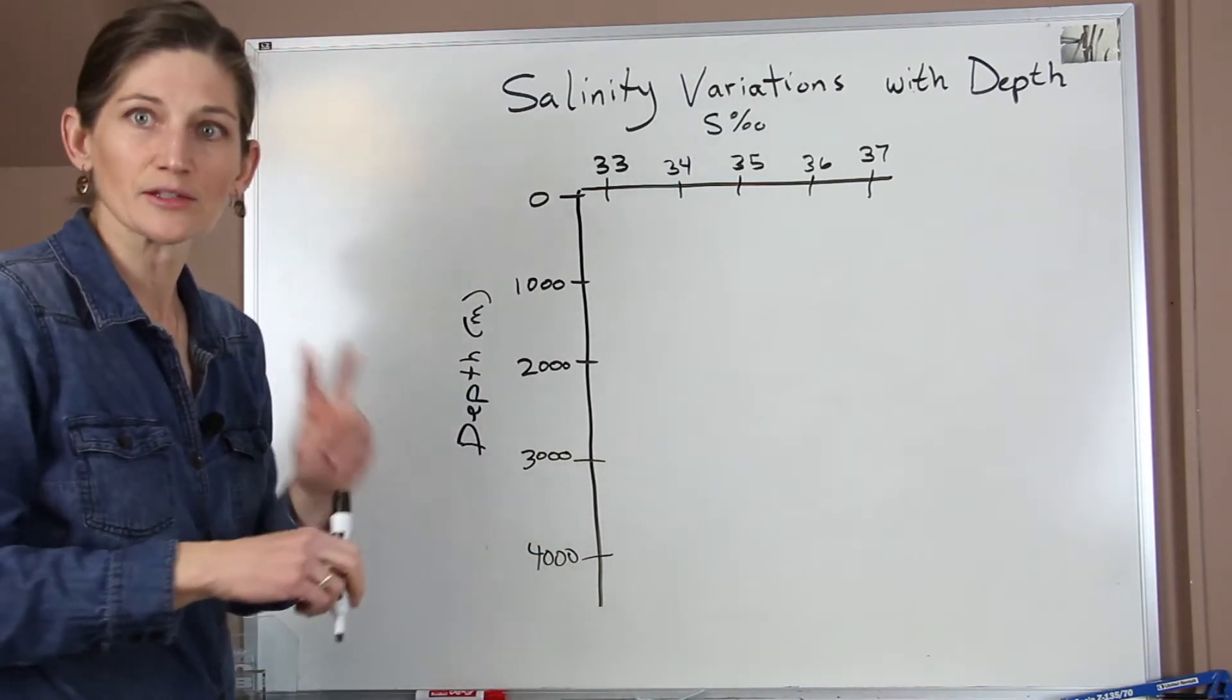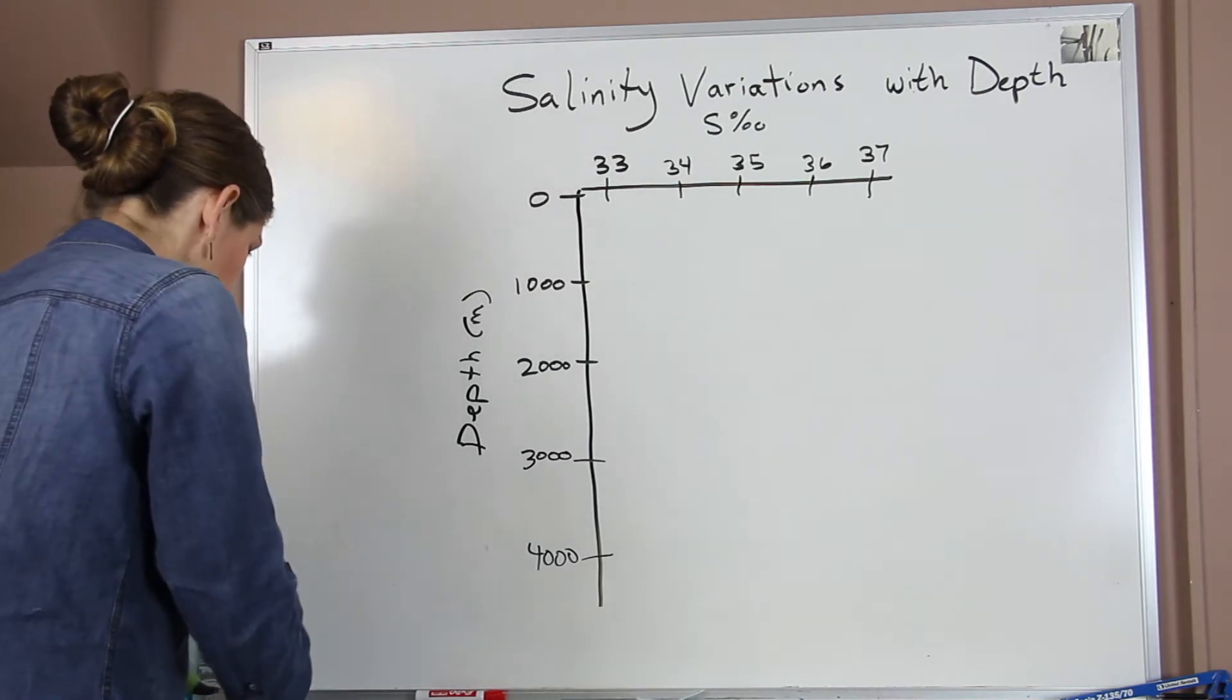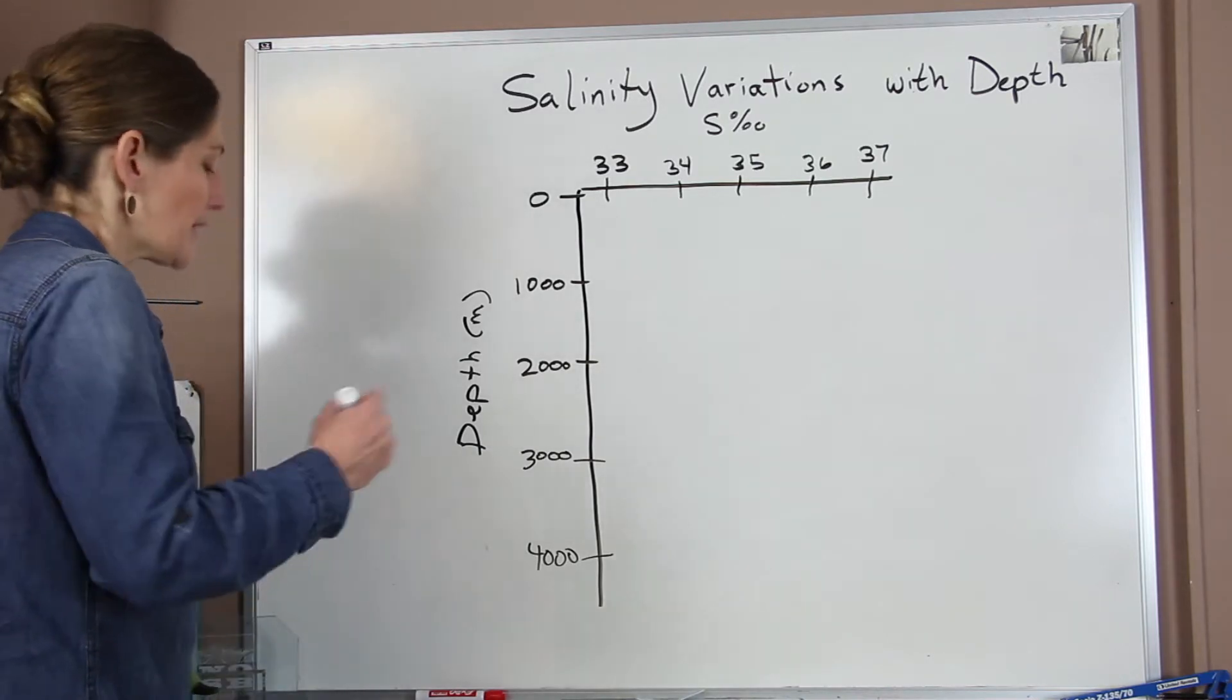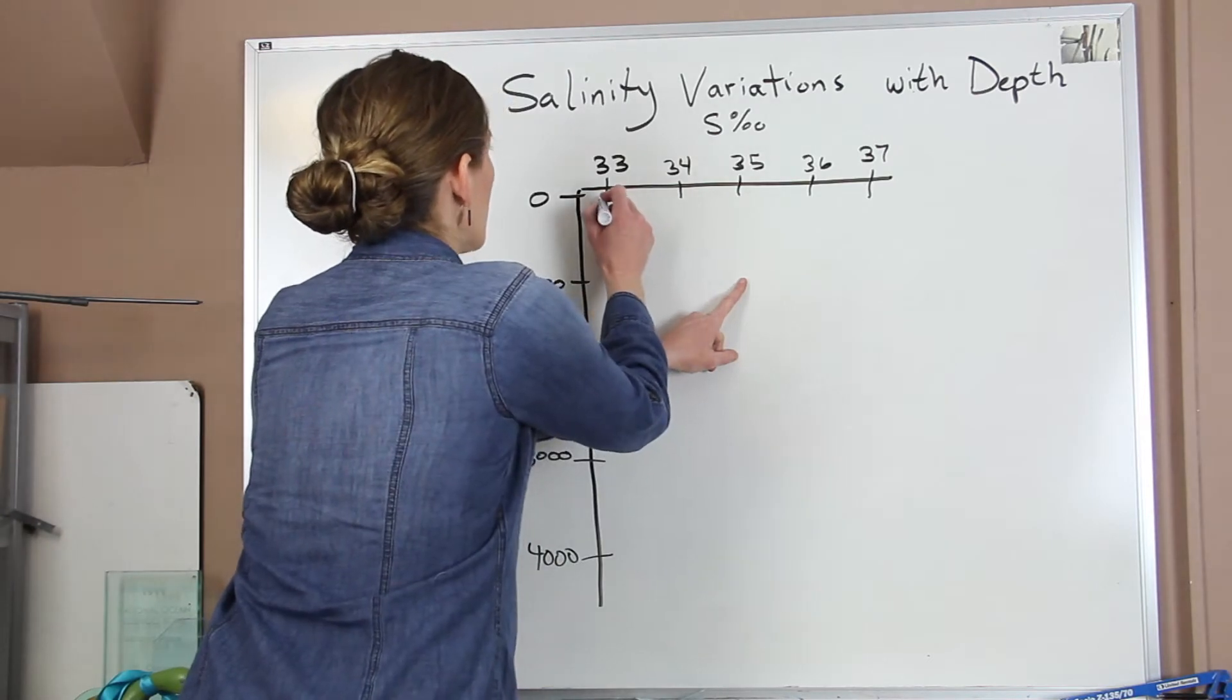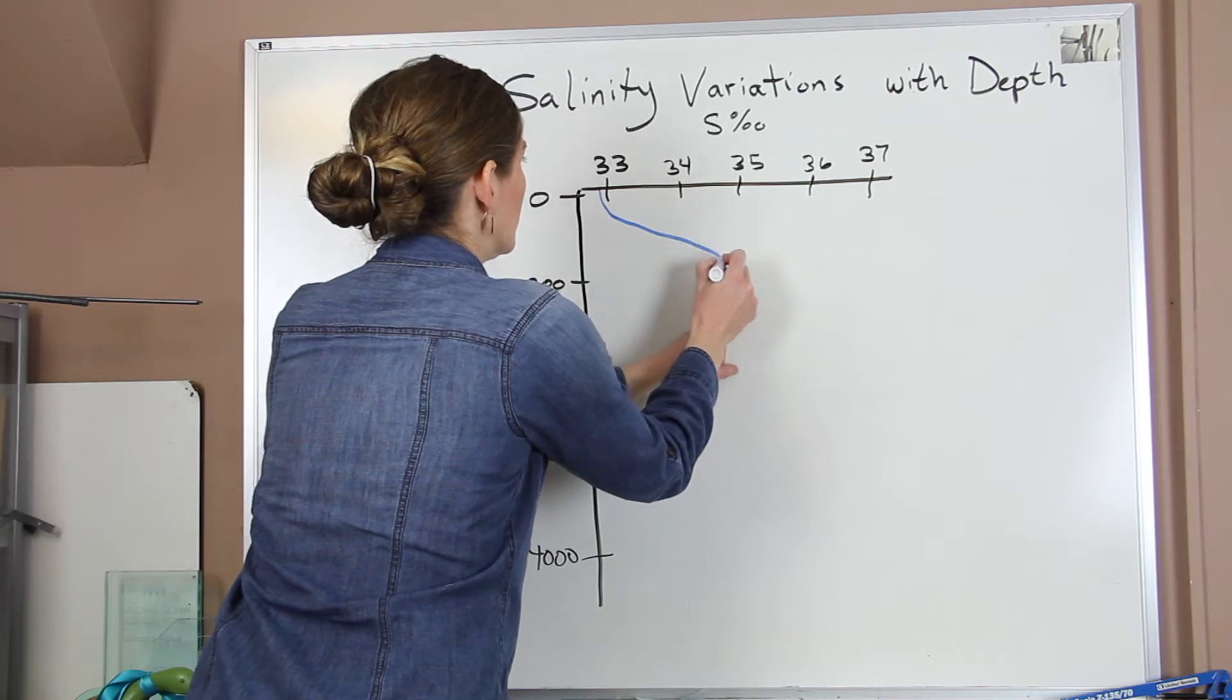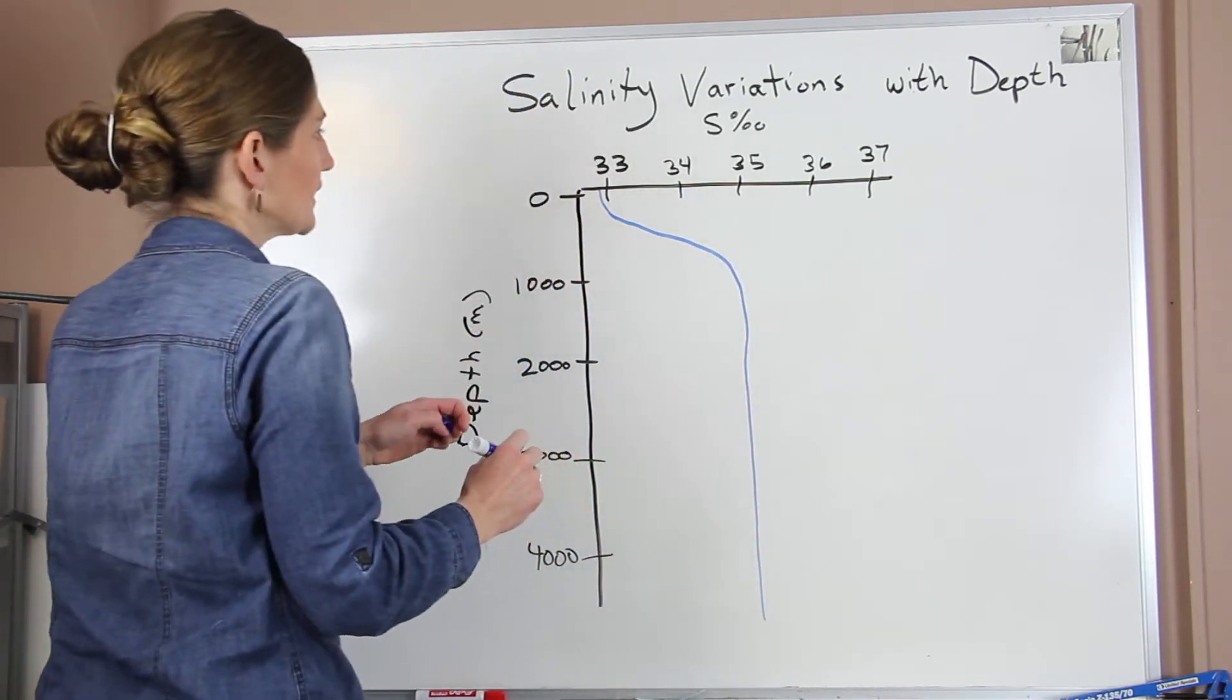And so when we go out to places, we find that there are two different curves that we start to see. In our high latitudes, so this would be in our polar areas, what we see is that we have lower salinity.